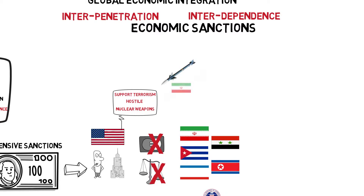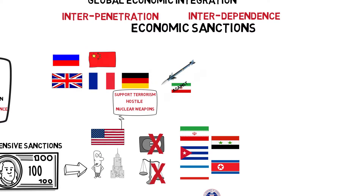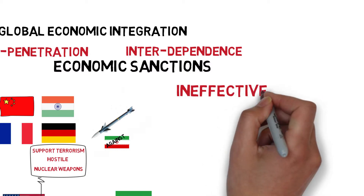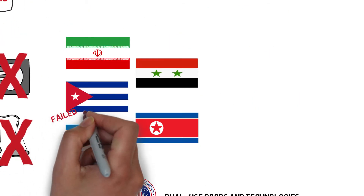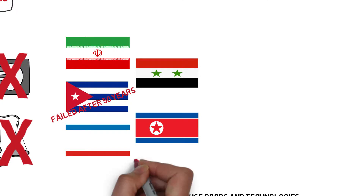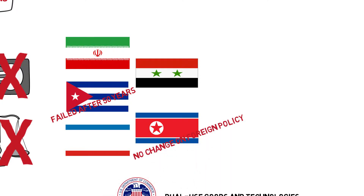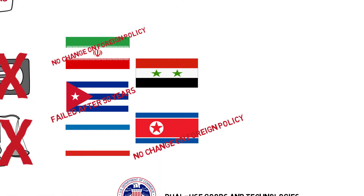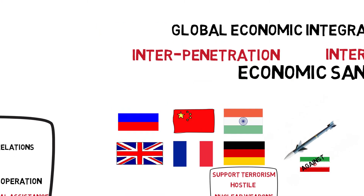United States economic sanctions against Iran have been boycotted by the U.K., France, and Germany, not to mention Russia, China, and India. Historically, economic sanctions have often been ineffective. U.S. economic sanctions against Cuba failed after 50 years, and the economic sanctions against North Korea and Iran did not change the foreign policy of those two countries. The long-term financial sanctions against Russia in 1998 led to a major earthquake in Russia's financial markets.